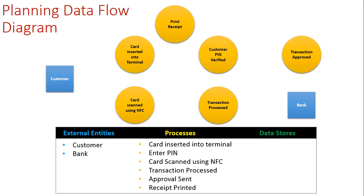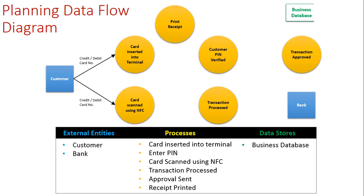All our processes are now on the page. The last thing to add is our data store — the business database. I've put that in a location near the transaction processing step because I have a good idea that's where it's going to connect. You really do need to be methodical in where you place your elements, because now we need to put in our flow lines and it has to make logical sense. The first step is the card being presented and the ID number being recorded from the card.